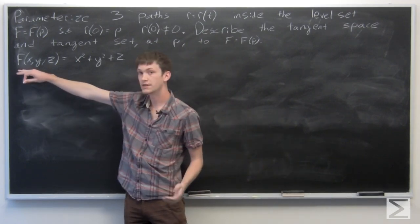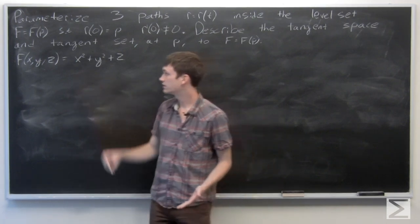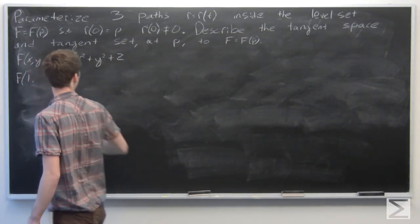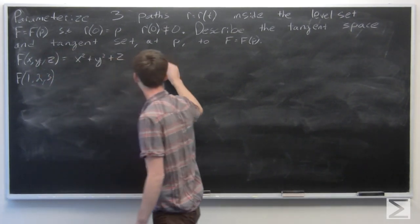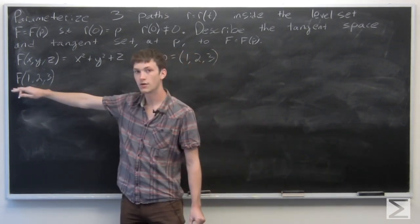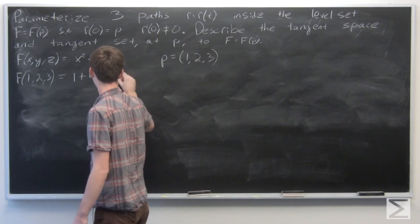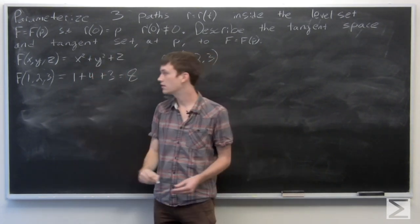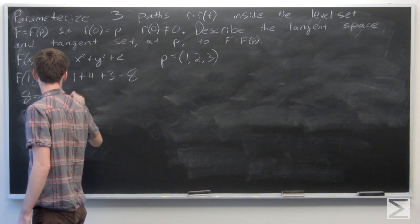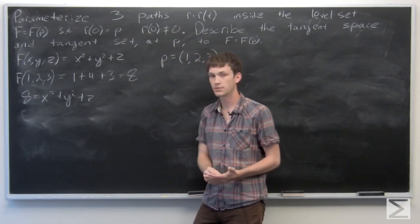We're given the function f equals x squared plus y squared plus z. First, let's find what our level set is. p is the point (1, 2, 3). So f of p equals 1 plus 4 plus 3, which is 8. So we're looking at the level set: 8 equals x squared plus y squared plus z.